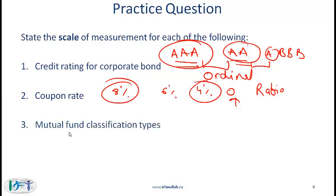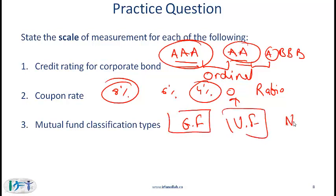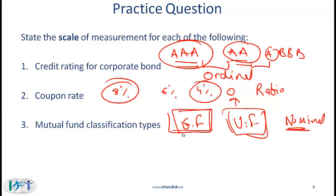Mutual fund classification types: if you have a fund classified as a value fund, this is a nominal scale where only the name makes sense. We can't say a value fund is better than a growth fund — the classification is just identifying two different kinds of funds. The name makes sense, so this is a nominal scale. An easy way to remember this is N for nominal and N for name.